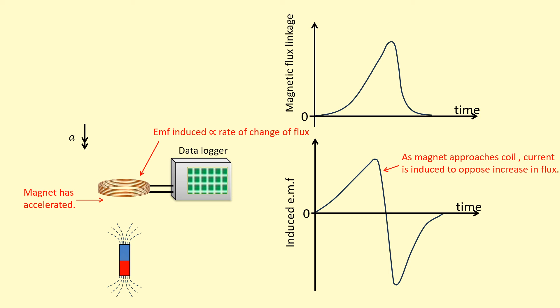Once it's leaving, because it's accelerated, it's going to be leaving faster. So we get a larger rate of change of flux as it leaves. So there's going to be a larger EMF induced as it leaves. So that's why we have a larger negative value at the bottom.